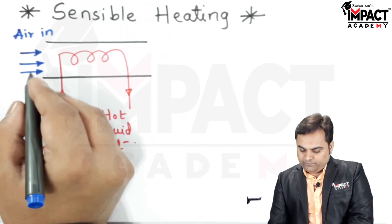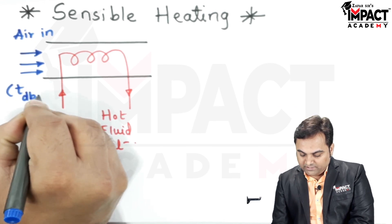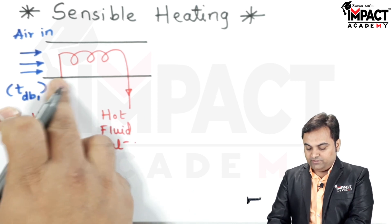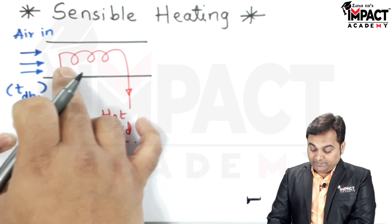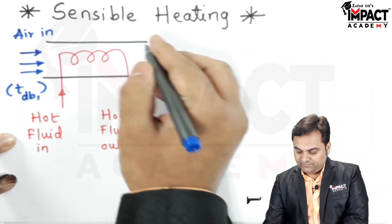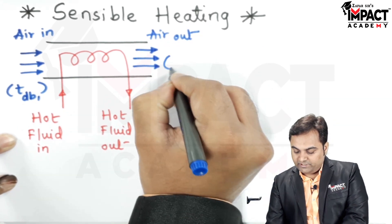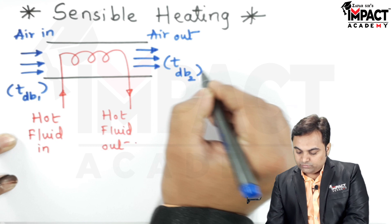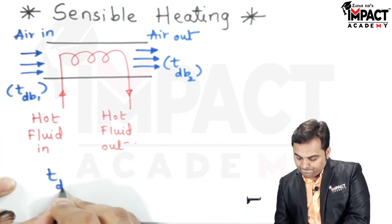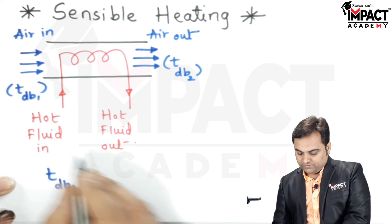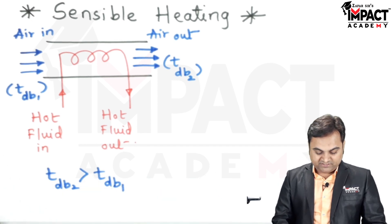And this air would be having the dry bulb temperature which is t_db1, the term which I am using for the incoming air. Then when it comes in contact with the heater, the temperature of the air will go on increasing and it goes out at a temperature of t_db2, the dry bulb temperature of air at the exit, which is obviously greater than the dry bulb temperature of incoming or intake air because this is a sensible heating process.